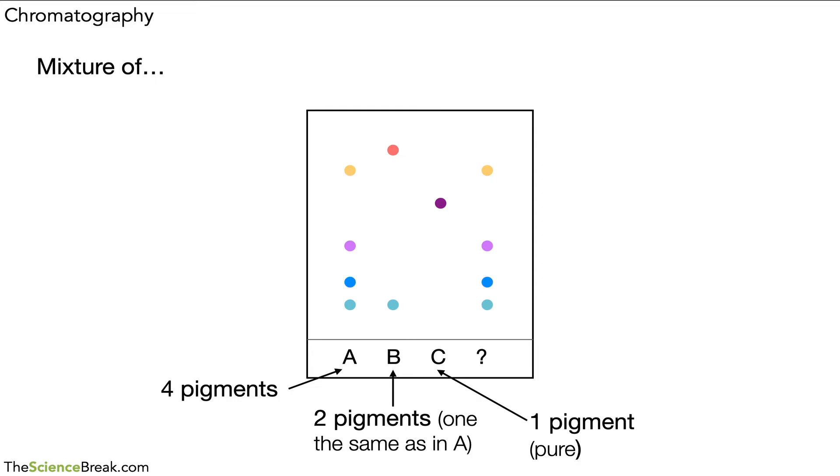If we look at our mystery one, the question mark, this is actually the same as A. We can tell that because the pattern of the spots is the same—there are four spots and they have all moved exactly the same distance to their corresponding spot on pigment A. So the mystery one is pigment A. Quite a lot of information you can tell from a chromatogram about the pigments that have been used and separated out.